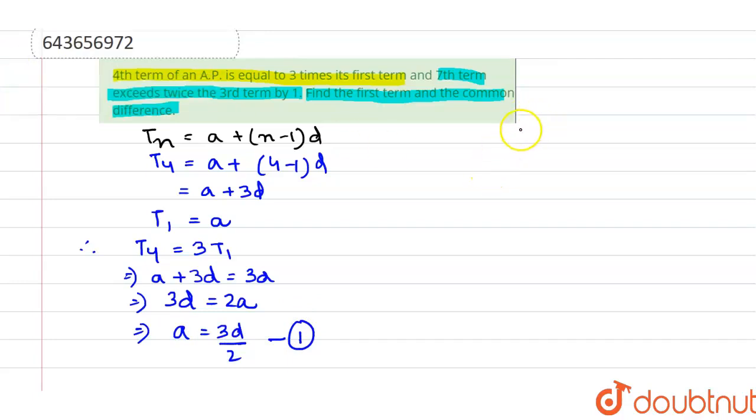Now, the seventh term of the AP will be equals to a plus 7 minus 1d, that is a plus 6d. Also, third term is equals to a plus 3 minus 1d which is equals to a plus 2d.